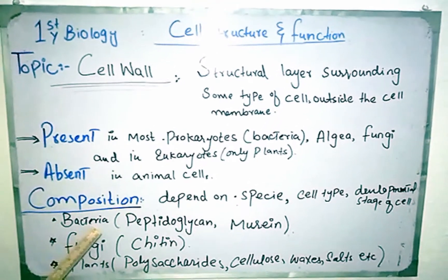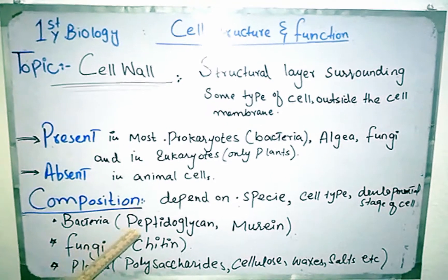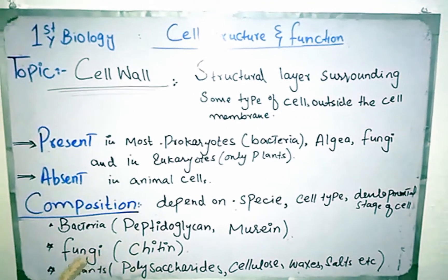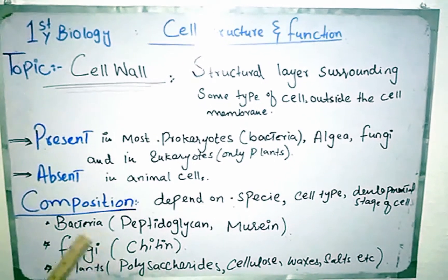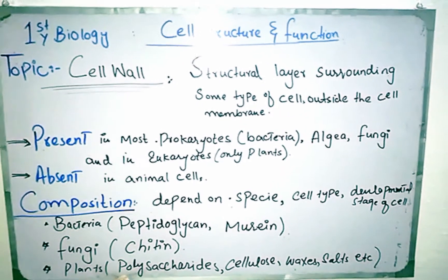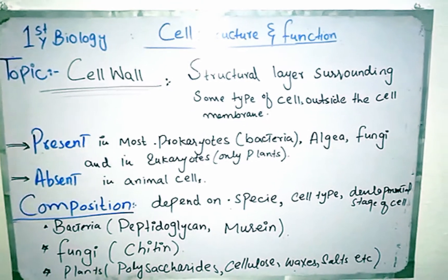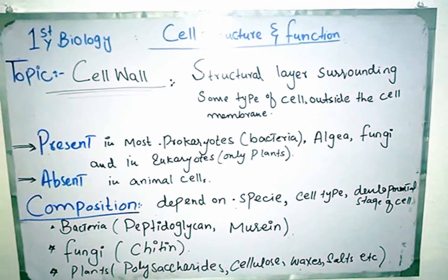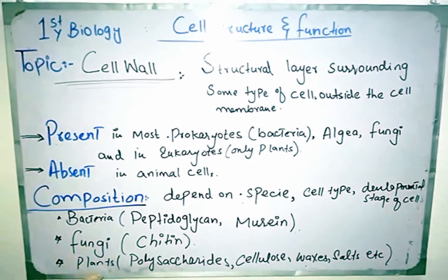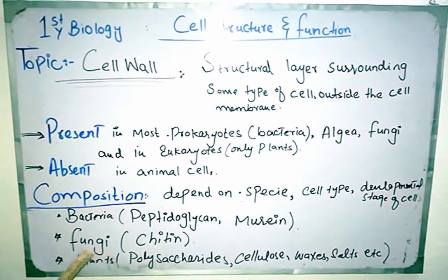In bacteria, the composition varies; the cell wall is made up of peptidoglycan and murein. In fungi, it is made up of chitin. In plants, it is usually made up of polysaccharides including cellulose, and different waxes and salts. But the composition of the plant cell wall also depends on its layer.